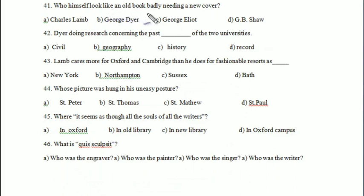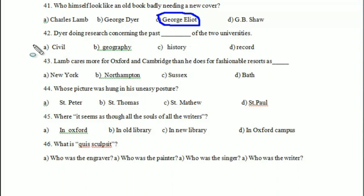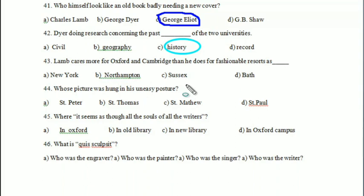Who himself looked like an old book badly needing a new cover — Charles Lamb, George Dyer, George Eliot, or G.V. Shaw? Your answer is George Dyer. Dyer was doing research concerning the past of two universities — civil, geography, history, or record? Answer is 'history.' Lamb cares more for Oxford and Cambridge than he does for fashionable resorts such as New York, Northampton, Sussex, or Bath? Your answer is 'Bath.'